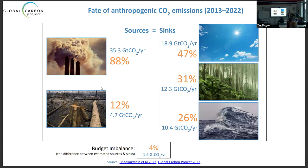Because all five terms are estimated independently, we have what's called a budget imbalance. When you add them up, sources don't quite equal the sinks — we've got a 4% error on average over the decade. It doesn't seem that high, but it's something we need to keep an eye on because it really encapsulates our uncertainty in the carbon cycle — what don't we understand?